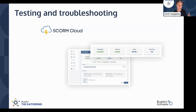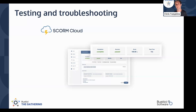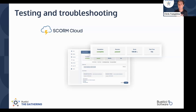But if SCORM Cloud isn't able to see a completion, we probably know that the course is doing something weird, and we can look at the debug logs to get to a facts-or-friendly moment to say, hey, you're sending this completion in a weird way. What if we fix it in this way?